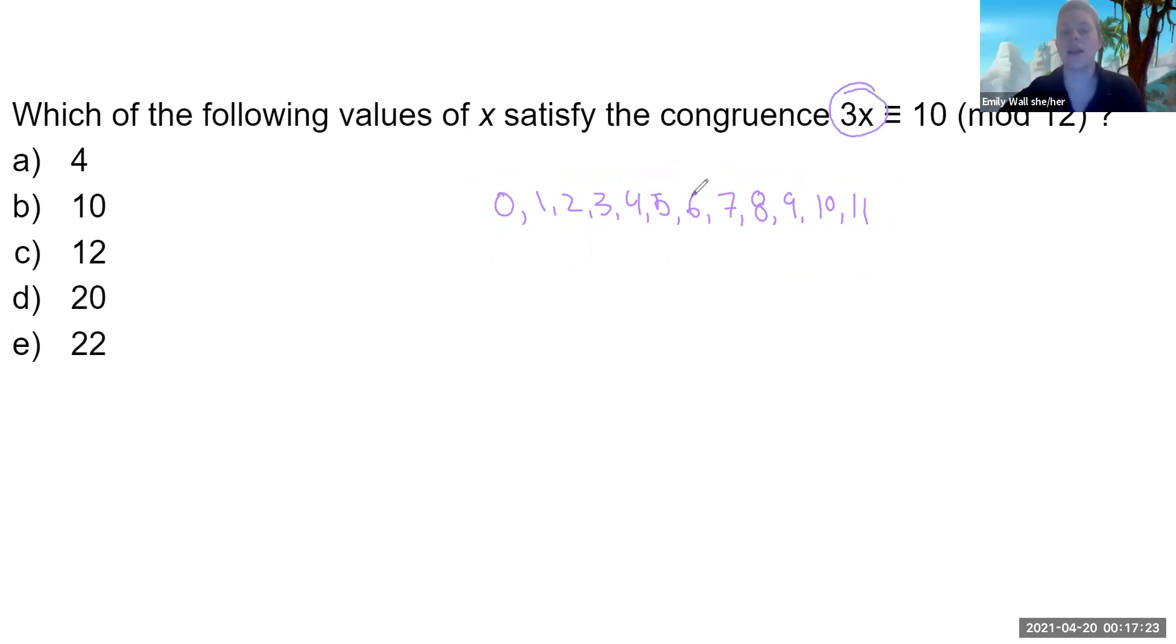I'm going to think about the left hand side. Are there any of these numbers that could be the left hand side? The left hand side has to be a multiple of three, right? It's three times something. So which of these are a multiple of three? Well, zero is a multiple of three, three is a multiple of three, six and nine.